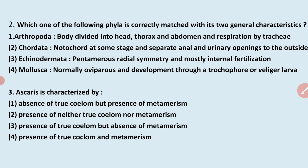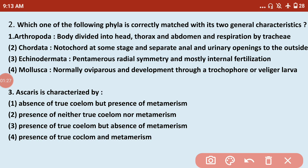Next question: which one of the following phyla is correctly matched with its two general characteristics? For Arthropoda, the body is divided into head, thorax, and abdomen, and respiration is by trachea — that is correct. For Chordata, notochord at some stage and separate anal and urinary openings — not mandatory. For Echinoderms, they have pentamerous radial symmetry and mostly internal fertilization — no. For Mollusca, they are normally oviparous and development is through a trochophore and veliger larva.